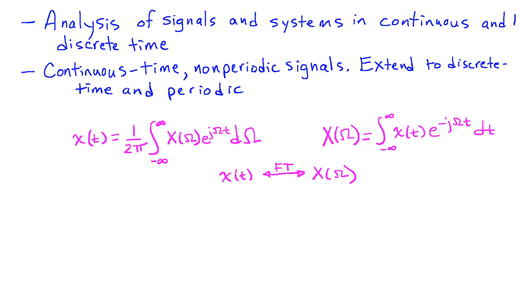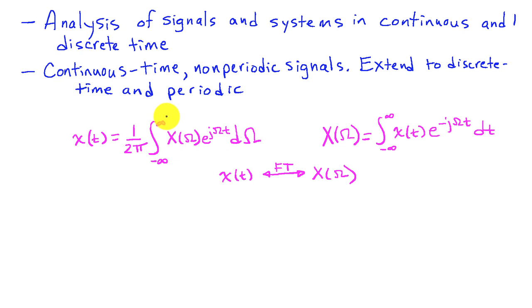The definition of the Fourier transform is shown in these two equations here. I have a signal x of t, and I'm going to express that as the integral of the Fourier transform of x of t, which is x of omega, times e to the j omega t d omega, integrating from minus infinity to infinity. x of omega is obtained from x of t, and x of omega is the integral from minus infinity to infinity of x of t times e to the minus j omega t dt.